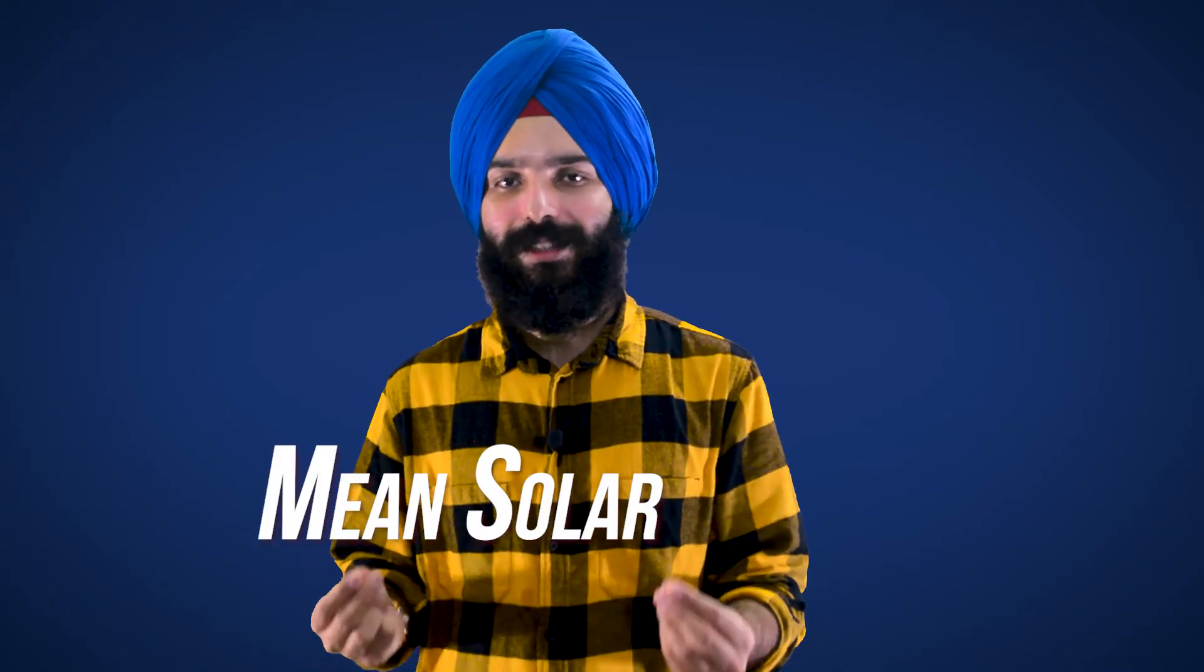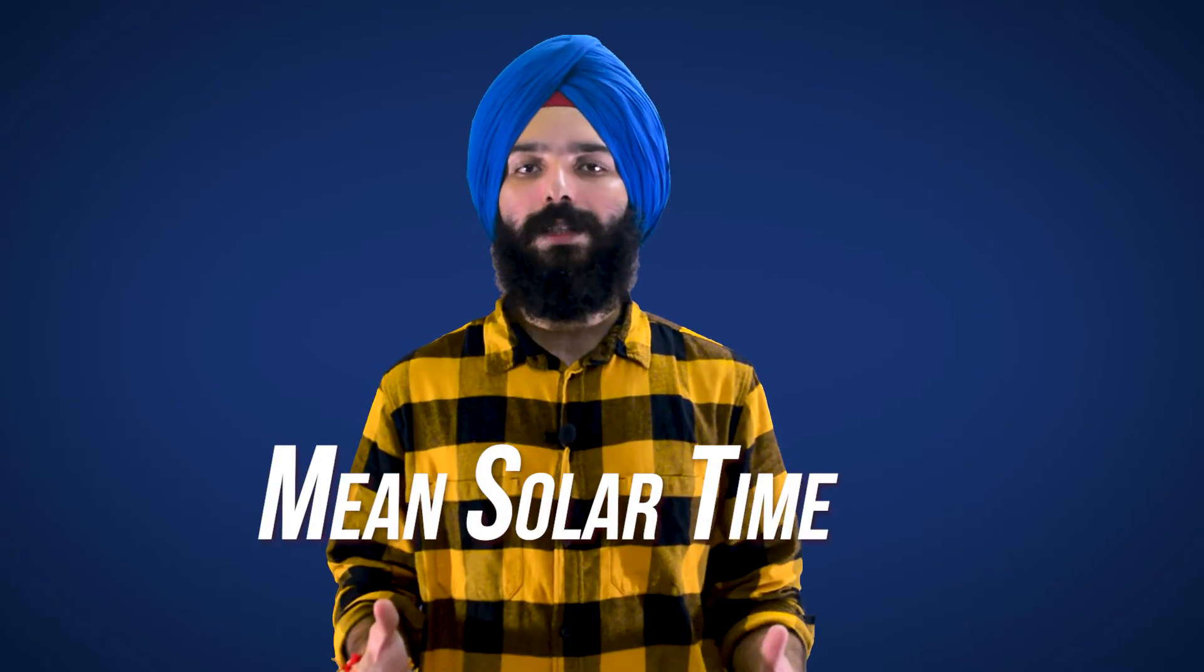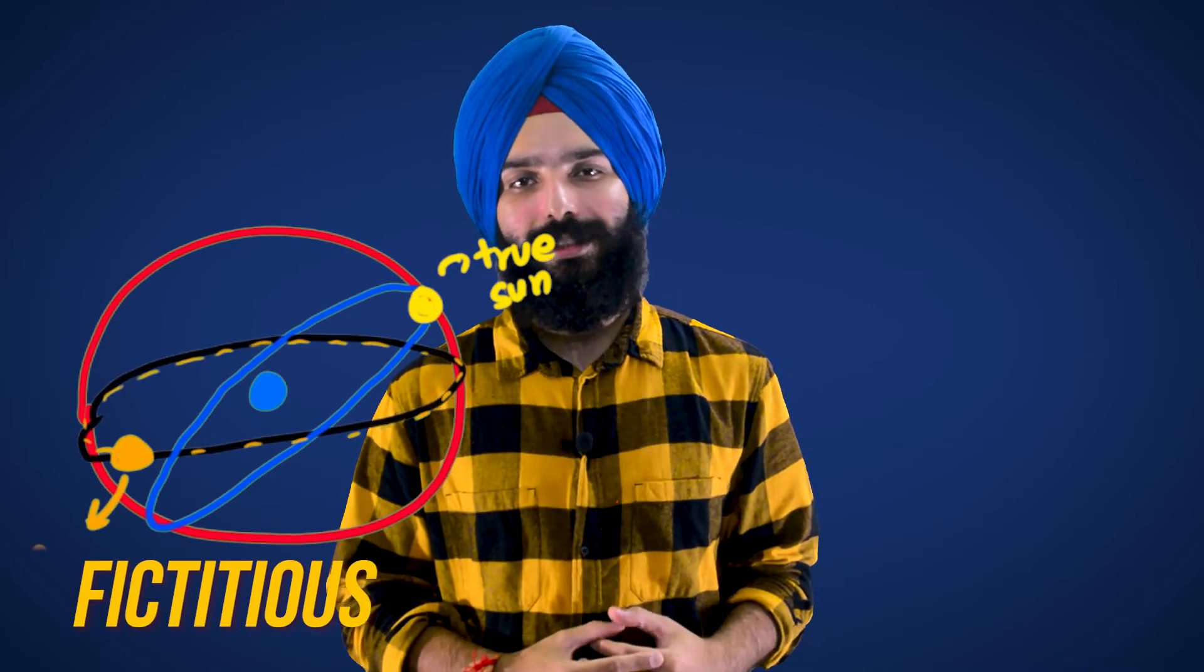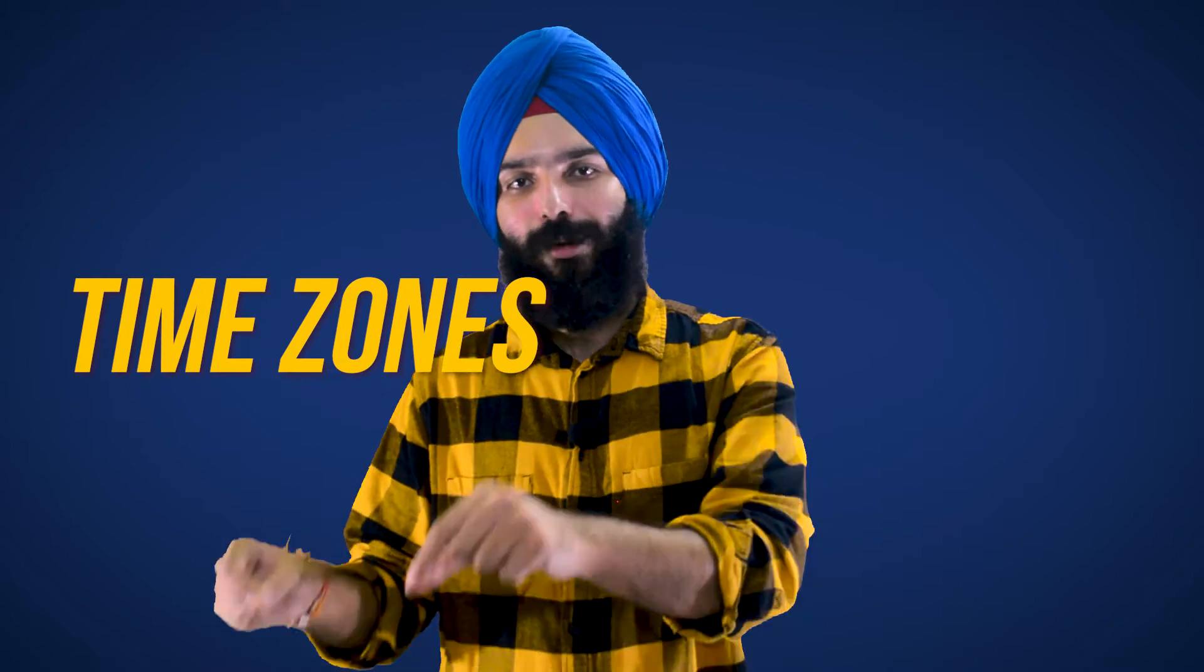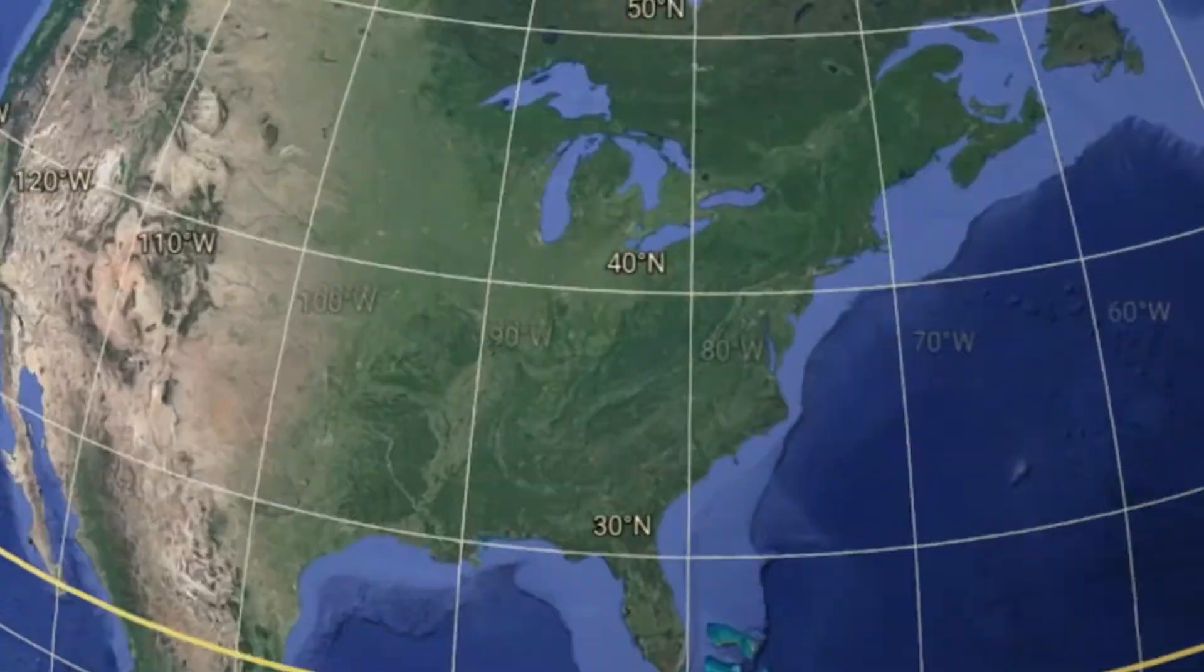Well, this is where the mean solar time comes in. And what we do is that we imagine a fictitious sun running in a circular path and then across the equator and completing its revolution at the same time as our original sun. This day is actually the one which is 24 hours long. And this is the same reason why we have divided our longitudes in time.